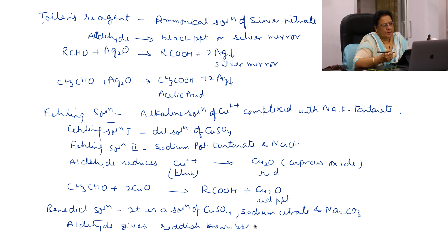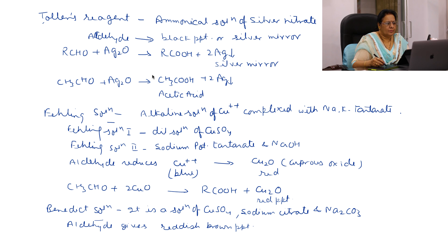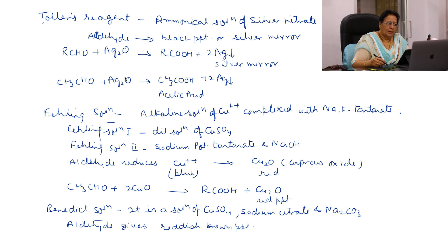Tollens reagent is the ammoniacal solution of silver nitrate. Aldehydes give a black precipitate or silver mirror with Tollens reagent. The aldehyde is oxidized to an acid and Ag2O is reduced to silver.